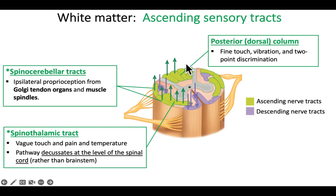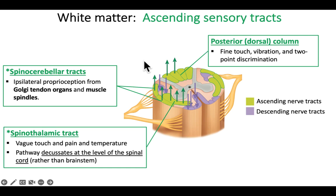There are other tracts in the posterior column — fine touch, vibration, and two-point discrimination, which is a very precise type of sense. But these all have one thing in common: they're going up the spinal cord to some part of the brain, so they are ascending sensory tracts.